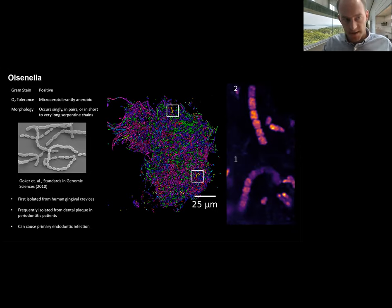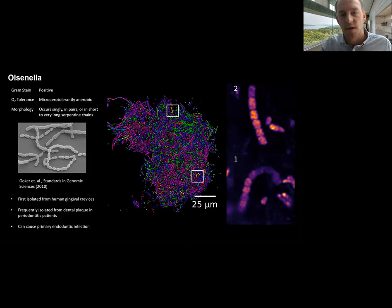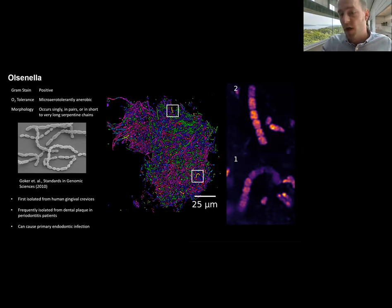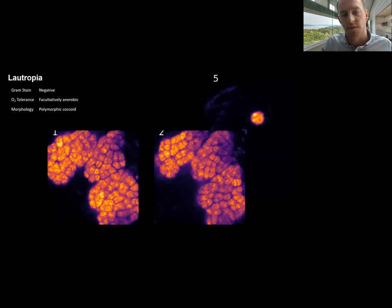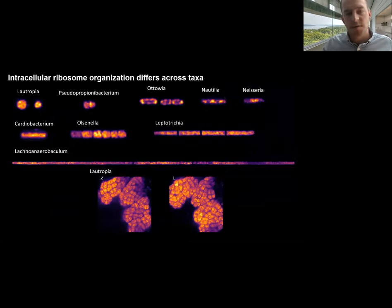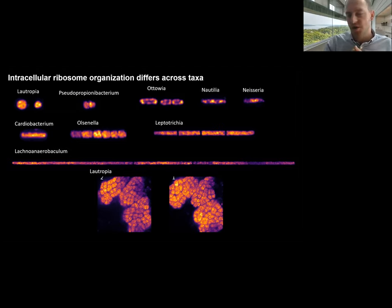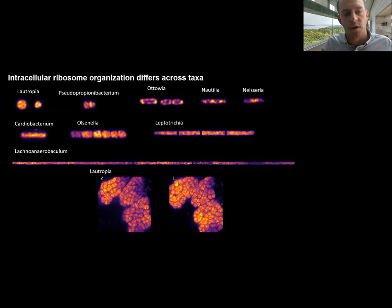Here is Olsonella detected in this complex microbiome — a gram-positive microbe reported to occur in short to very long serpentine chains, and this is exactly what we find. The structures in our environmental microbes are very similar to what has been reported in culture studies, which is interesting because it allows us to study morphologies of species — sometimes species that cannot be cultured — in their native environment. We've also looked at Lautropia cells, recognizable as pleomorphic coccoid structures, clarifiable by super-resolution imaging. For ten different species, in cases where culture images are available, we find a good relationship between the structures we find and those reported in literature.